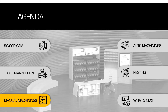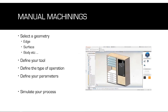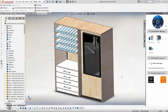Now I'll explain how to create a machining — first, how to create it manually. Defining a manual machining in SWOTCAM is actually rather simple; there are four major steps to follow. First, select the geometry — depending on the machining it can be an edge, a surface, or a body. Then define the tools you want to use, define the type of operation needed, and finally define the parameters. If needed, you can simulate the whole process directly on SWOTCAM using the simulation.